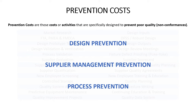Prevention costs are those activities or costs specifically designed to prevent poor quality — in other words, non-conformance. Throughout the entire quality system, whether we're talking about designing our product, managing our vendors, or managing our process, there are a number of activities that fall into this prevention bucket.